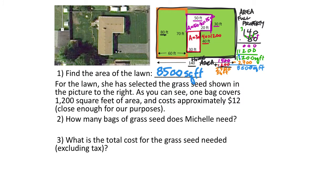For the lawn, she has selected a grass seed. One bag will cover 1,200 square feet, and each bag is $12. What we need to do is figure out how many bags we'll need. To figure this out, I'm going to take the total area of the lawn — 8,500 square feet — and divide it by how many square feet one bag will cover, which is 1,200 square feet. That'll tell us how many bags we're going to need.